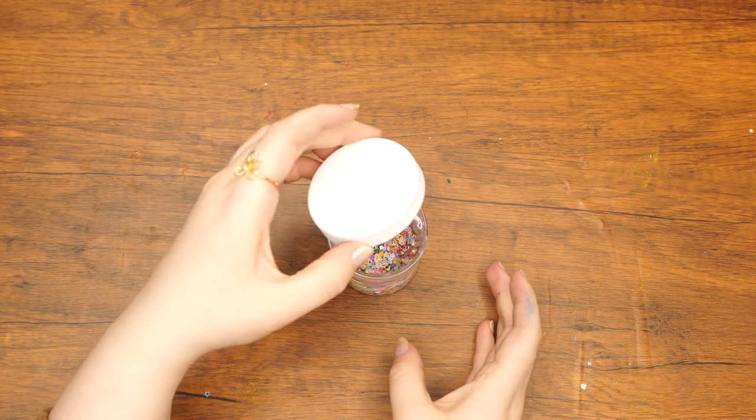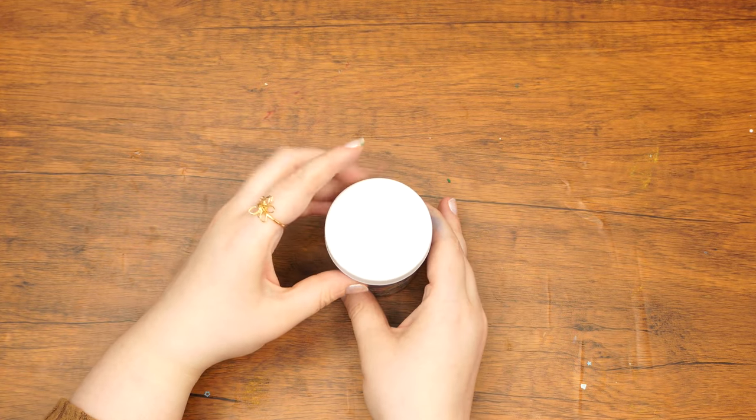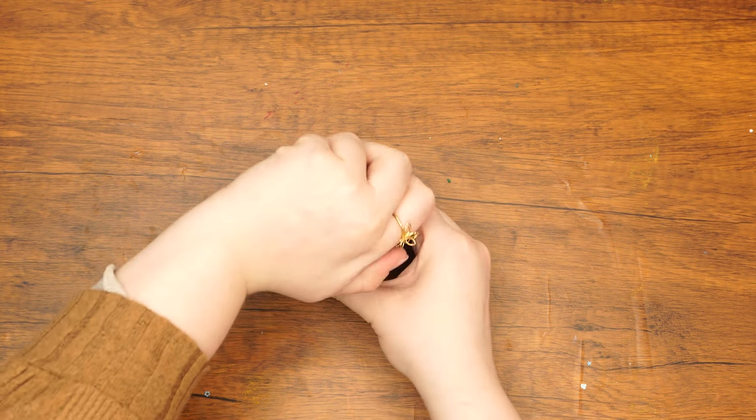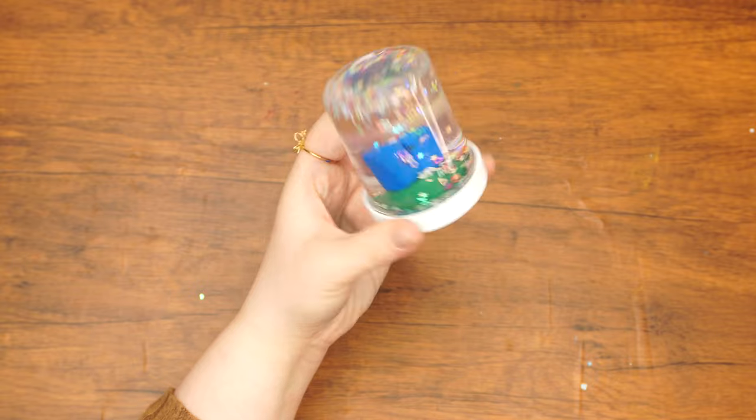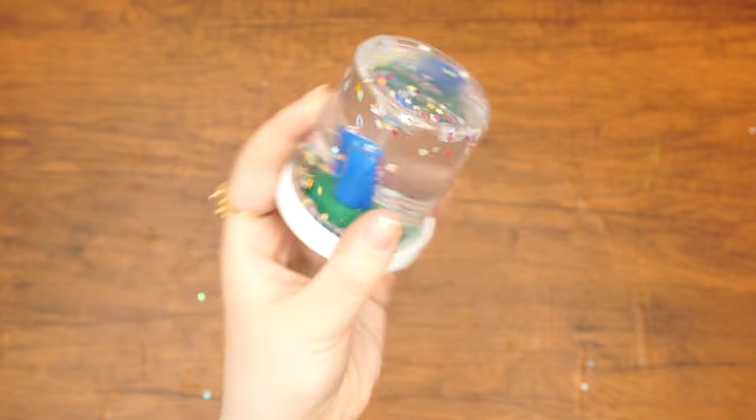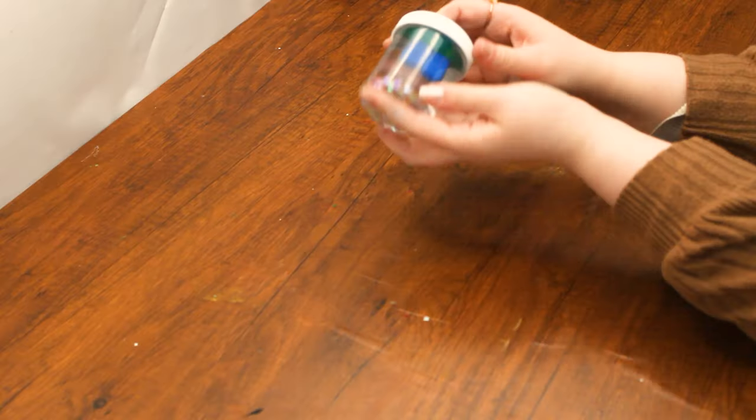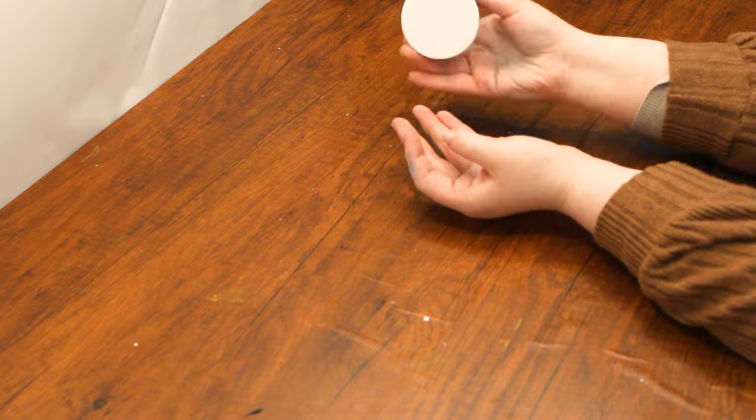Hashem gave us the Torah in the middle of the desert, an ownerless place, to show that it doesn't belong to a specific country or place but to every place. In doing so, He gave us the job of bringing Torah wherever we may go, like the Chassid in our story was told. Enjoy your Shavuos snow globe! Shake it up and watch the flowers settle onto the Har Sinai. Have a wonderful Shavuos! Kabbalat HaTorah b'simcha u'v'pnimiyut. See you next week!